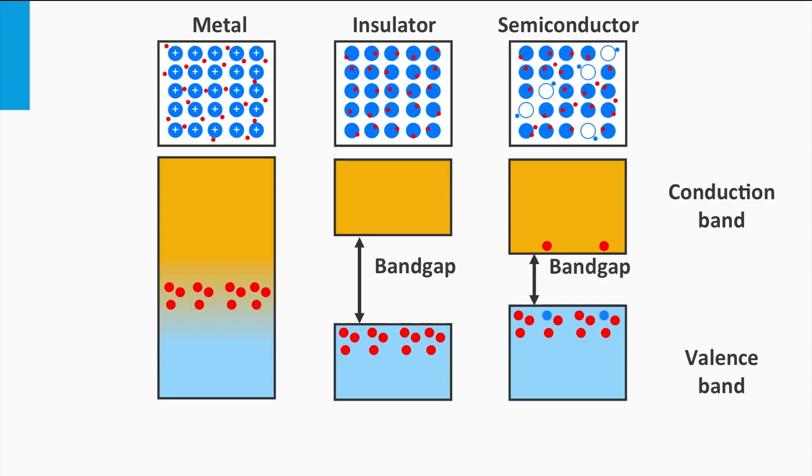The difference between insulators and semiconductors is that the band gap of an insulator is much larger than the band gap of a semiconductor.